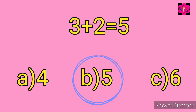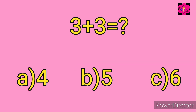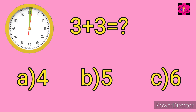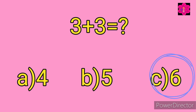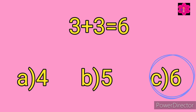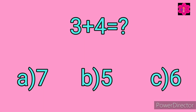Correct answer is 5. 3 plus 2 is equal to 5. Choose the correct answer, and your time starts now. Yes, correct answer is 6. 3 plus 3 is equal to 6. Well done, kids! Okay kids, ready for the next sum?